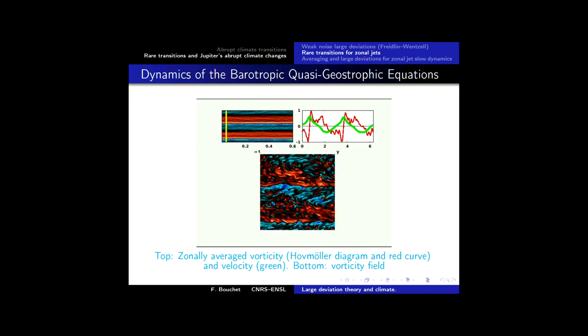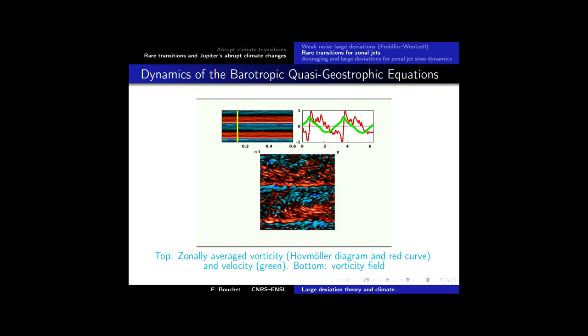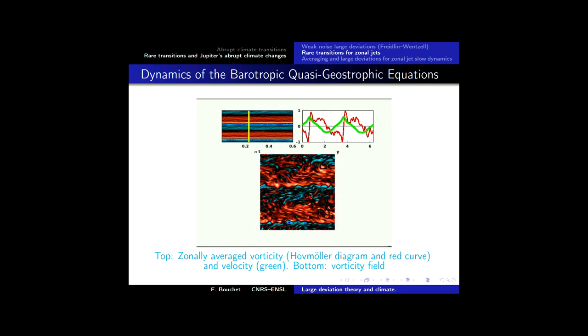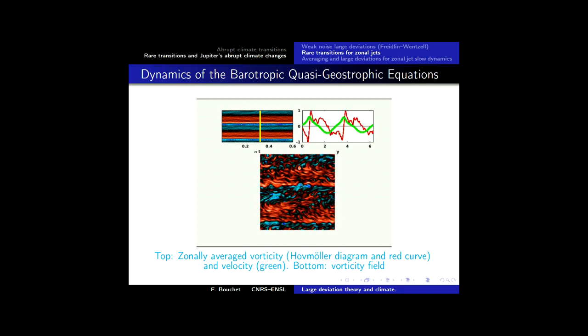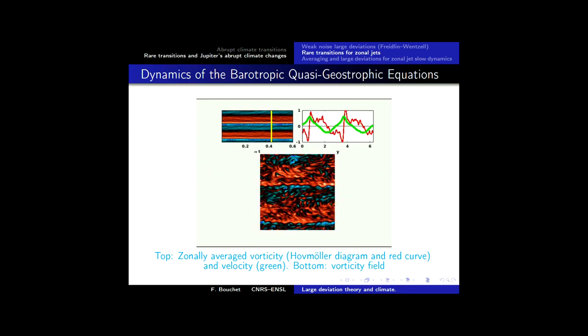Whether this barotropic model truly represents Jupiter's jets is controversial — it's really a toy model. The velocity profile has cusps that resemble mid-latitude Jupiter jets, but this model lacks the energy flux from equator to poles required on Jupiter. Jupiter has both internal energy sources and differential heating of comparable magnitude, while here we have only one mechanism.